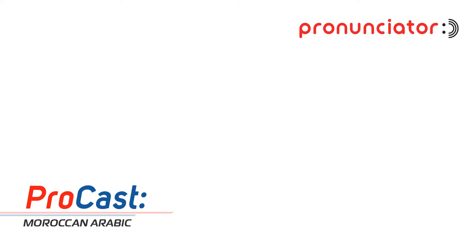One thing that always pops into my mind with languages I don't know is the writing system. Learning a whole new alphabet seems pretty daunting. What's the deal with written Moroccan Arabic? Historically, it didn't really have a standardized writing system. And if you think about Morocco's diverse cultural influences over the centuries, it makes sense. The text mentions that Moroccan Jews often used Hebrew script to write Darija, which speaks to that intertwining of cultures within Morocco.